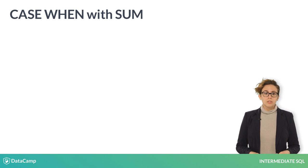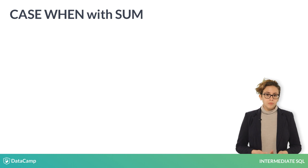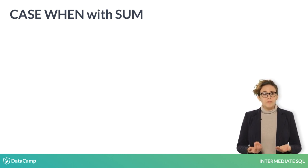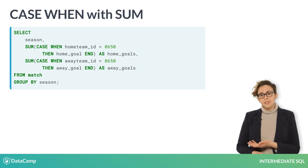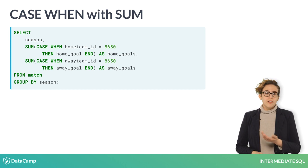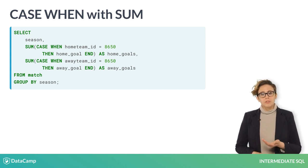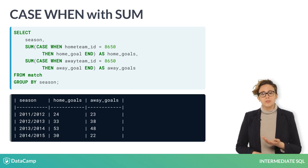Similarly, you can use the SUM function to calculate a total of any value. Let's say we're interested in the number of home and away goals that Liverpool scored in each season. If the home team ID is Liverpool's, return the home goal value. The ELSE clause is assumed to be null, so the query returns the total home goals scored by Liverpool in each season.